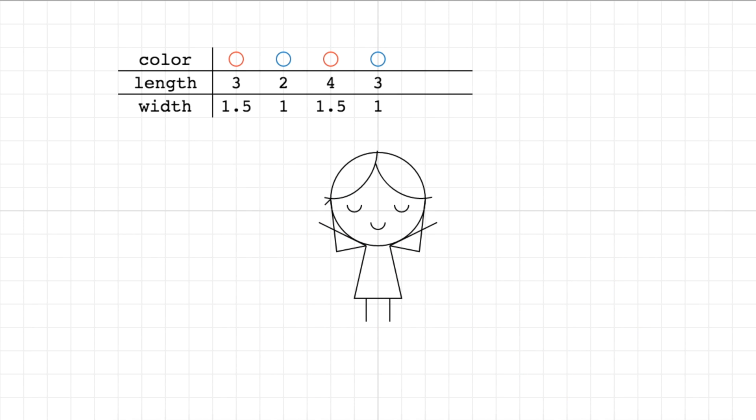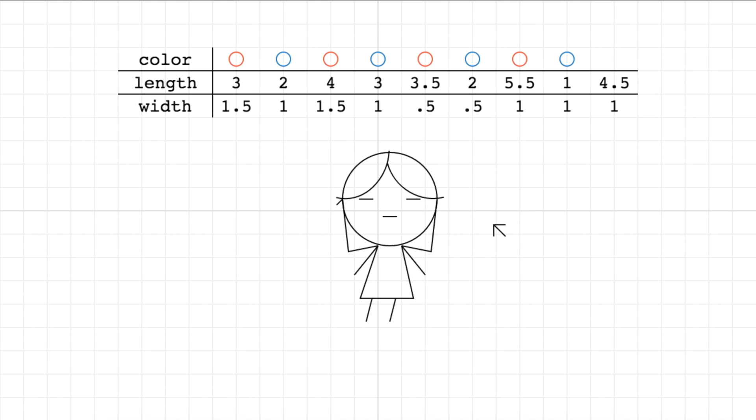Now she has some measurements but of course she has many more flowers so we'll let her record some more. Here is her complete data set. A data set is just a collection of measurements or just a group of numbers really. This is her data set, it consists of the color of the flower, its length and its width of the petal from that flower. Oh, it looks like she forgot to note down the color of this last flower.